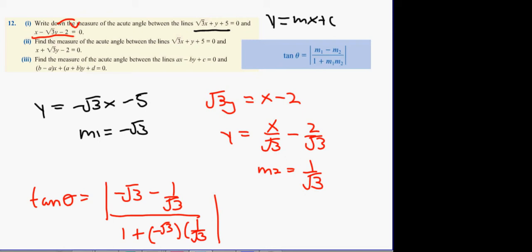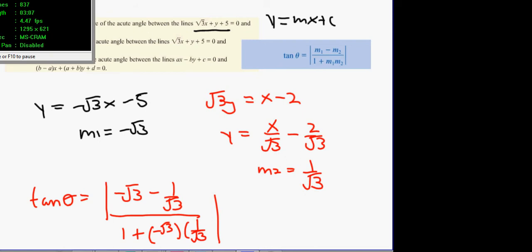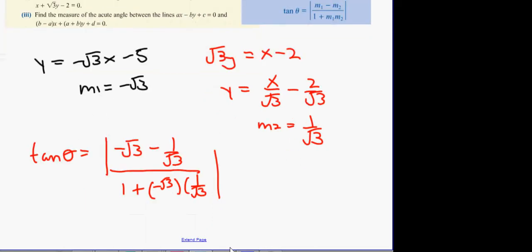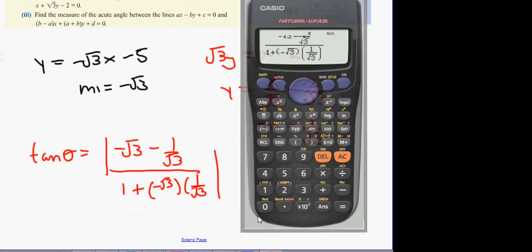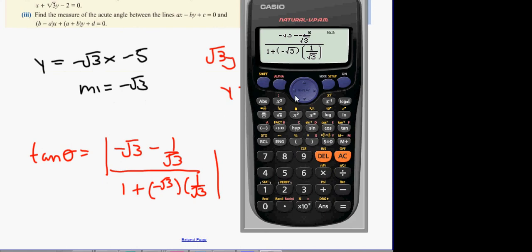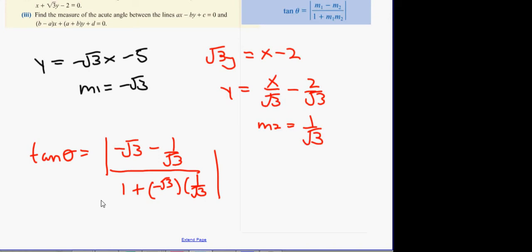In a test, when you get a maths error, it basically means there's no answer or the expression is divided by zero. What you can see here is that the bottom is divided by zero, which means it's undefined.